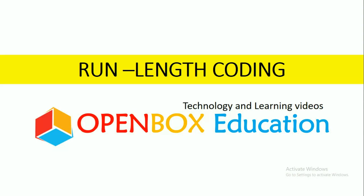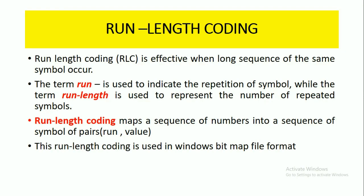Welcome to Open Box Education. In this video I'm going to explain about run length coding, which is used in image compression schemes. Run length coding, simply called RLC, is effective when long sequences of the same symbol occur — here the symbol is a character. The term 'run' indicates the repetition of a symbol, while 'run length' represents the number of repeated symbols.